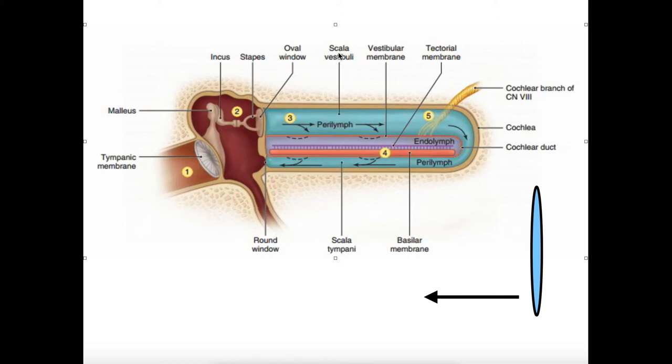Now if we look at this tube system, on top we have the scala vestibuli, also called the vestibular duct. In here, this purple region, they call it the cochlear duct, its other name is the scala media, and then on the very bottom we have the scala tympani, which is the tympanic duct. In other words, from top to bottom we have the vestibular duct, the cochlear duct, and the tympanic duct.